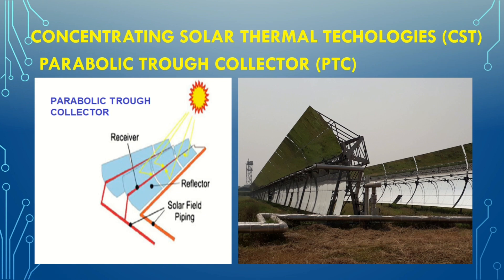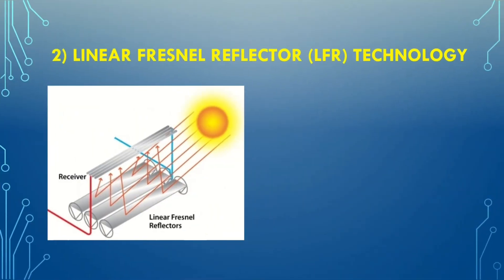This steam is used to rotate the turbine to generate electricity — that is how we generate electricity through PTC technology. The next one is linear Fresnel reflector technology. In this technology we have these reflectors, and here is the receiver which contains the fluid. The sun rays get reflected from these reflectors to the receiver, and the fluid gets heated.